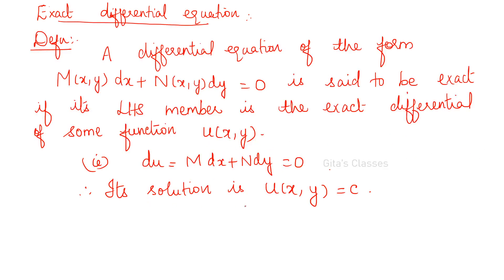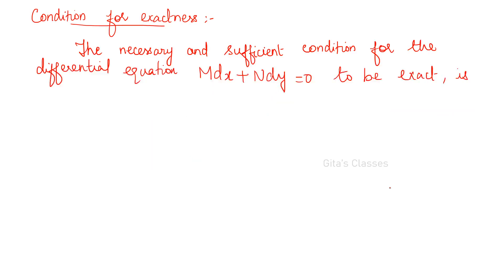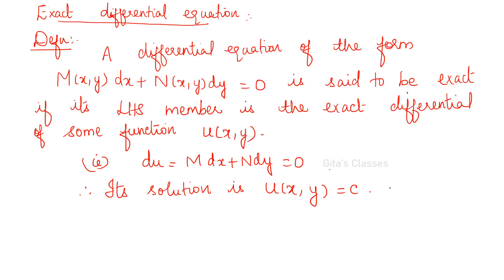If you can write it as the differential of some function of x and y, then it is called an exact differential equation. In that case, the solution is u(x, y) = c — the relation between x and y. That is the solution of this differential equation.